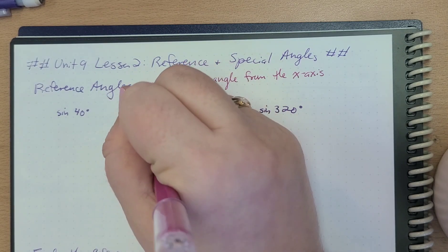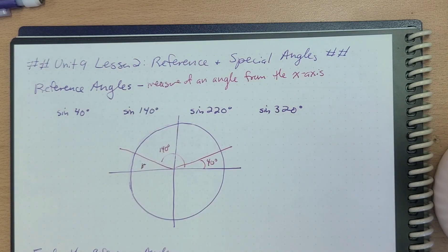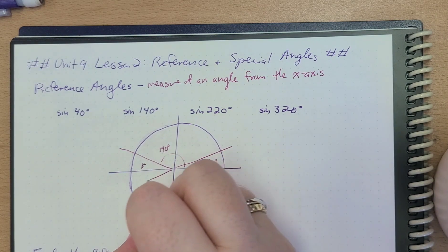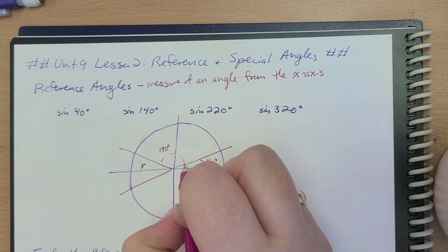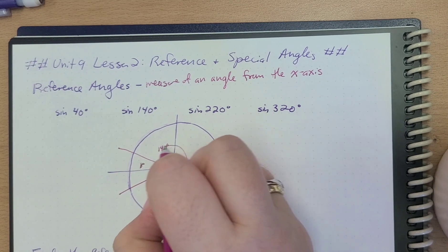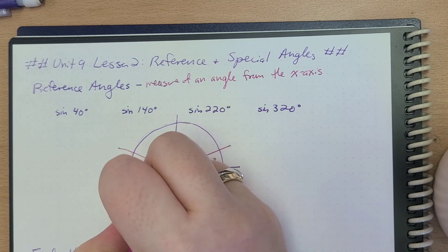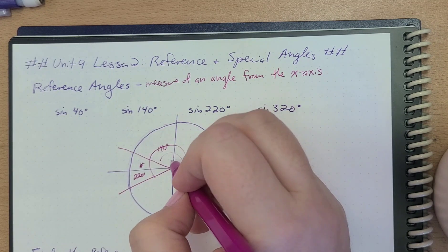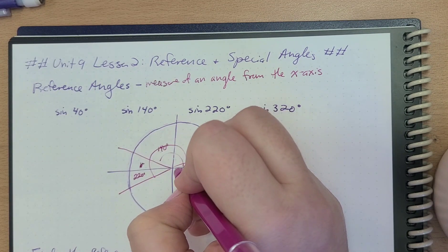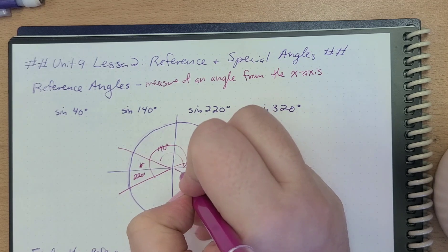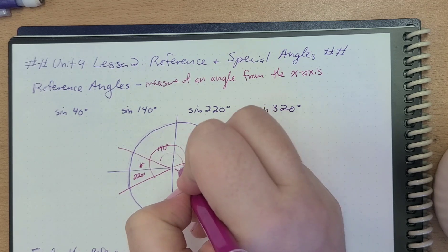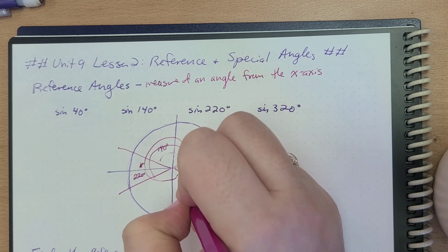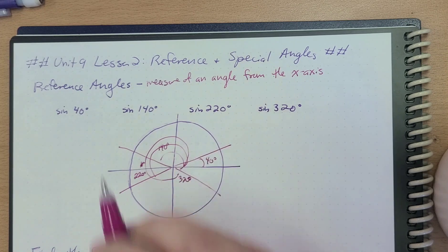Like here would be 140 degrees. And then the sine of 220 would be roughly right here — this is 220. And if we did the sine of 320, that'd be right here, so there's 320. But we can identify two angles.